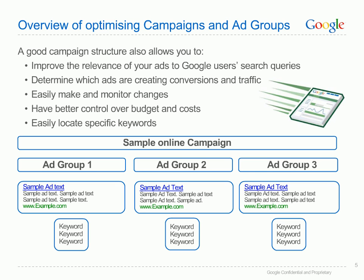In this section, we will show how well-structured campaigns by theme or product will mean more than just an account that's easy to manage and keep organized. You'll also have sets of ads and keywords that are directly related to each other. This helps improve your quality score, which in turn keeps your costs low. A good campaign structure also allows you to improve the relevance and thus effectiveness of your ads to Google users' search queries.